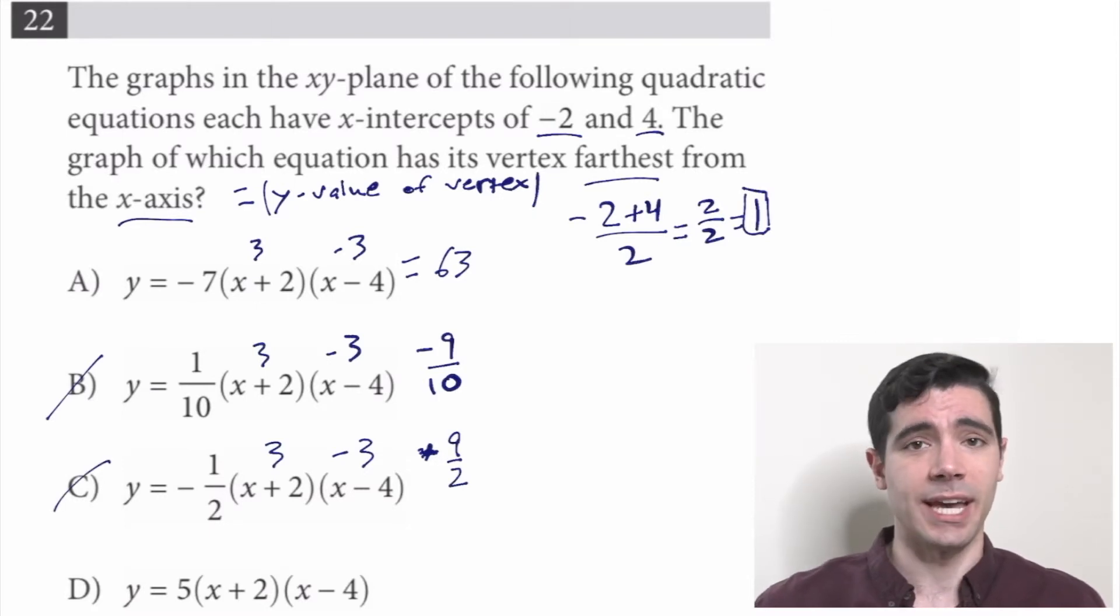And then we go on to D. Same roots again, so negative 9 times 5, or negative 45. Much closer, but still not as big as 63. So the answer is A. Sweet.